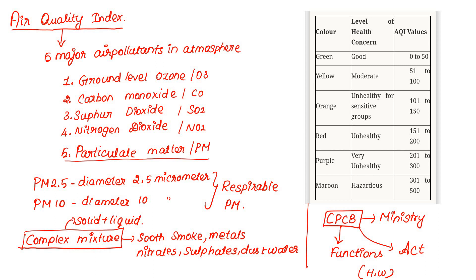The AQI measures pollutants including ground-level ozone, carbon monoxide, sulfur dioxide, and nitrogen dioxide. It also measures particulate matter: PM2.5 and PM10.